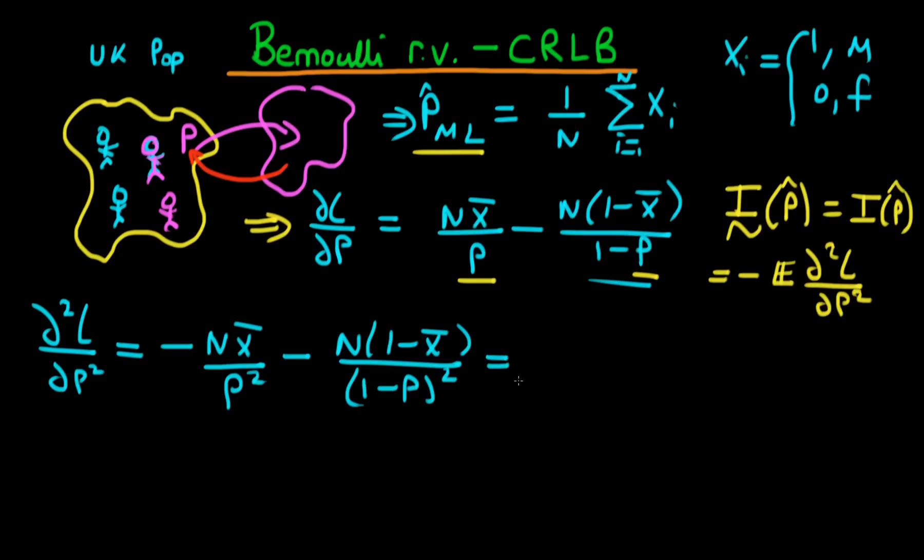And in order to simplify this, I need to combine both of these two fractions. So what I'm actually going to do is I'm going to take out a factor of minus N, and then I'm going to cross multiply. So I'm going to multiply this term by one minus P all squared, and this top by P squared. So combining these fractions, we have that this is equal to minus N times open brackets, we're going to have X bar times one minus P all squared minus one minus X bar times P squared, all divided through by P squared times one minus P all squared.